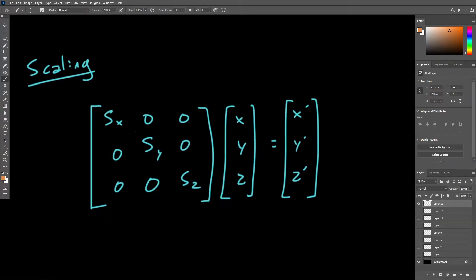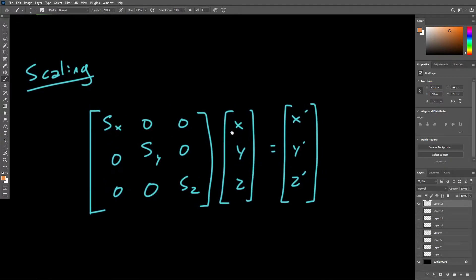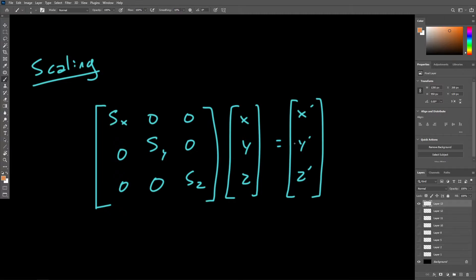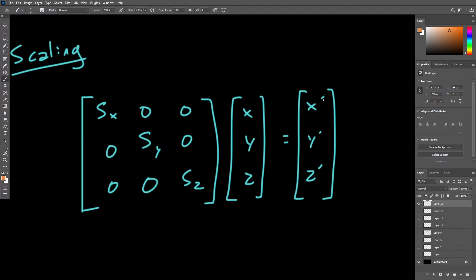Now by multiplying this matrix by some vector, which represents some point in space, we can end up with the transformed version of that vector, or x prime, y prime, and z prime. Just each of those components transformed according to this matrix.